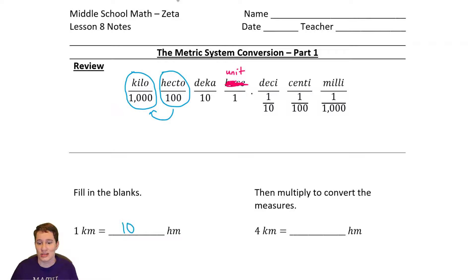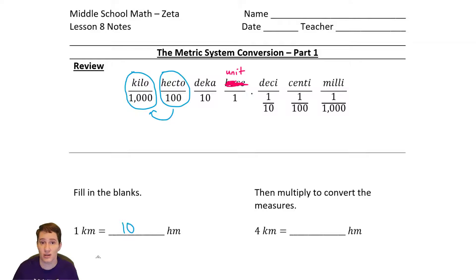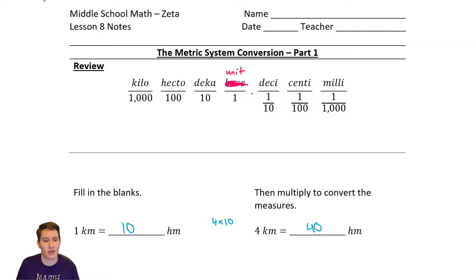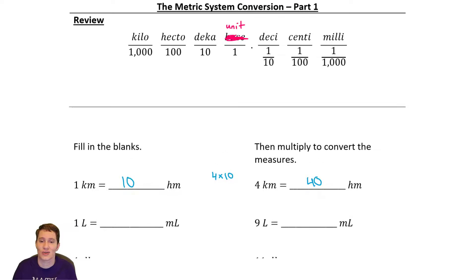We can take some other amount of kilometers and figure out how many hectometers there are. For instance, if I was to ask you how many hectometers are there in four kilometers, our first step would be to think: how many hectometers are in one kilometer, which our answer was 10. Now I've got four, so I'm going to need to do four times 10 to get 40. If 10 hectometers is in one kilometer, then for four kilometers, I would have four times as many hectometers, so that gives me 40. We're going to do quite a few of these, and hopefully at some point it'll be making sense.